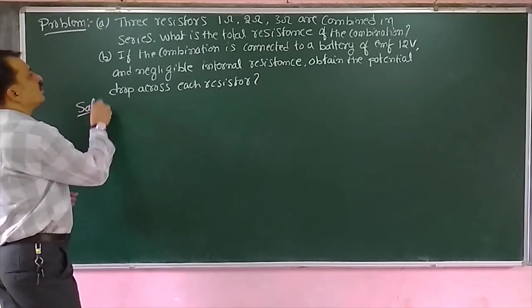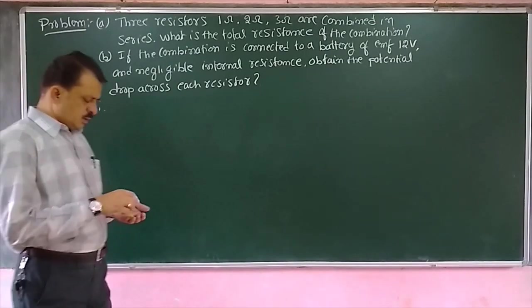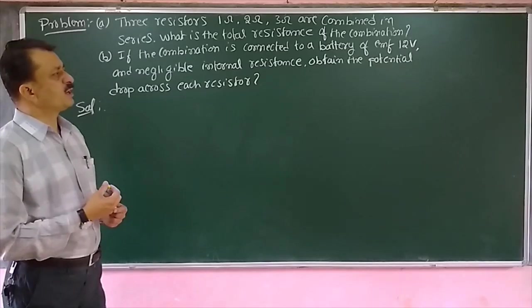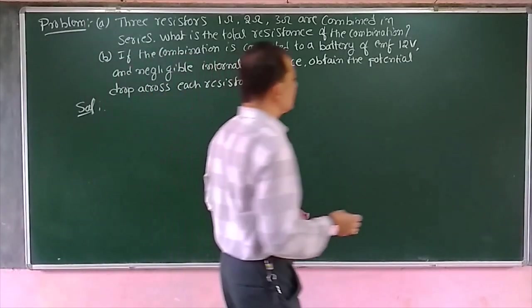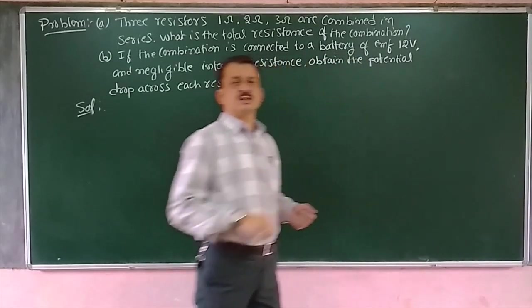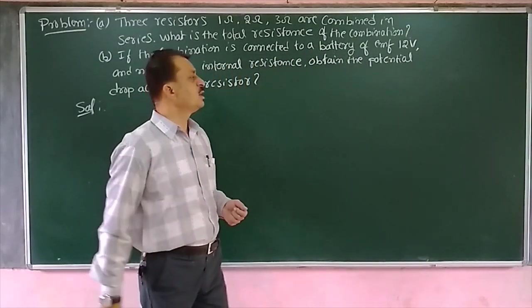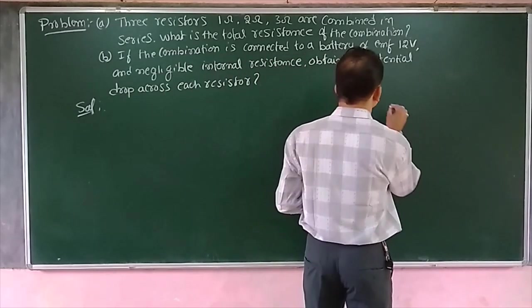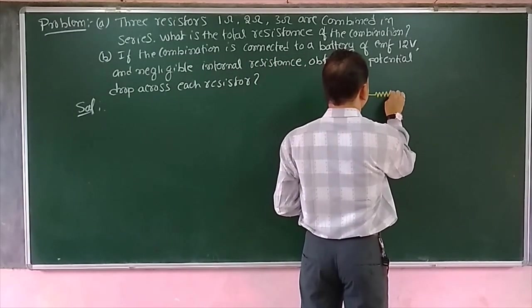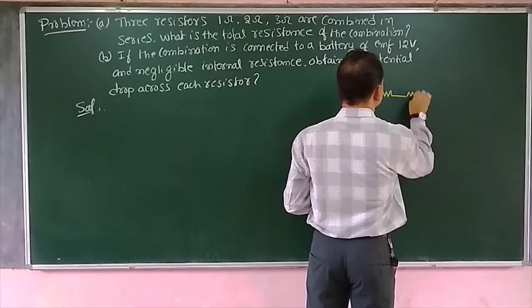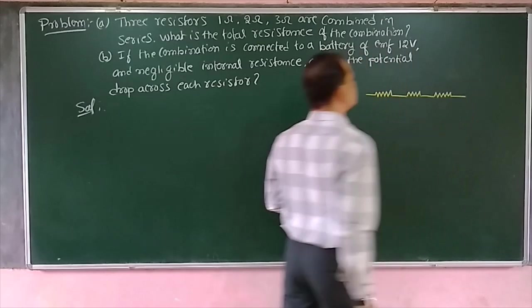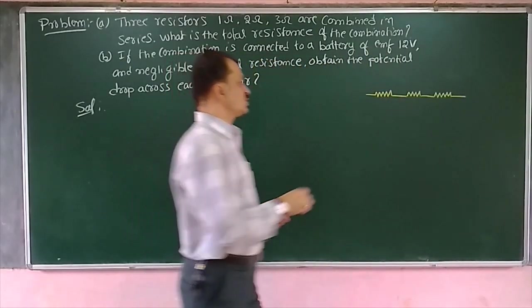Resistance values are given: 1, 2, 3 ohms. Find the equivalent resistance. Then if a battery of 12 volts is connected, what is the potential drop? First we calculate the current flowing through the circuit, then the potential drop across the three resistors. We have the first resistor connected in series with the second, and in series with the third resistor.